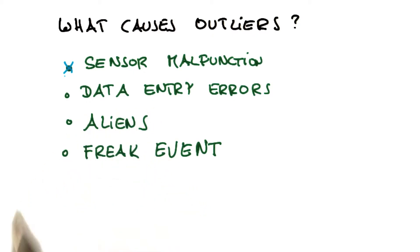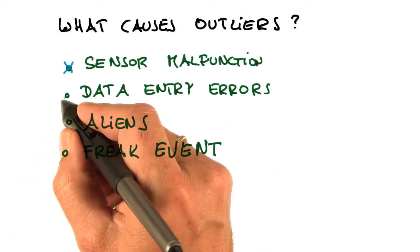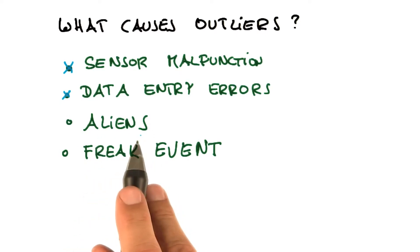We have them a lot in robotics. Data entry errors are common if someone enters your data. I'd say aliens are not common causes of outliers. You might be of a different belief, but I won't check them.